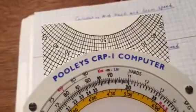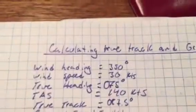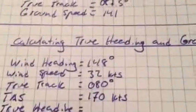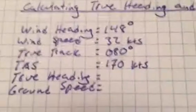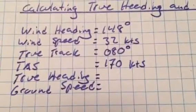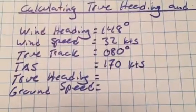Now we're using the Pooley CRP-1 computer for another video. Last time we calculated the true track; now we're finding the true heading and ground speed. We have: wind heading 149 degrees, wind speed 32 knots, true track 080 degrees, and true air speed 170 knots.